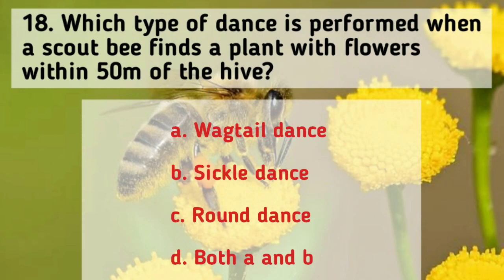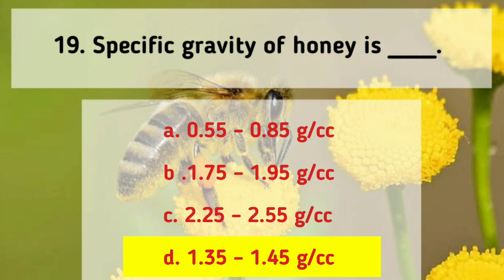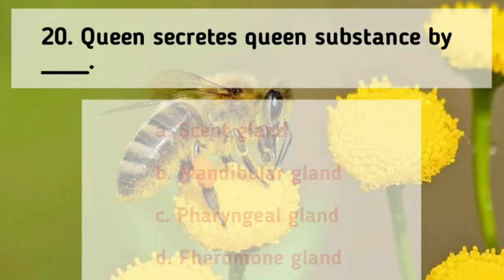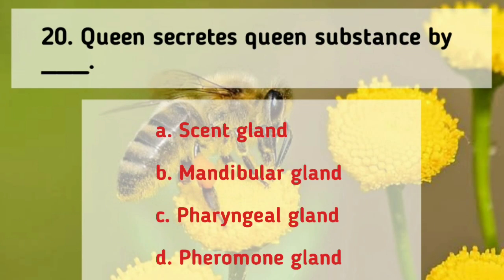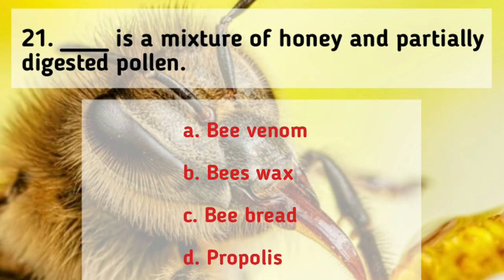When a scout bee finds a plant with flowers within 50 meters of the hive, it performs a round dance. The specific gravity of honey is 1.35 to 1.45 grams per centimeter cube. Queen bee secretes queen substance from the mandibular gland. A mixture of honey and partially digested pollen is known as bee bread.